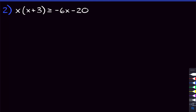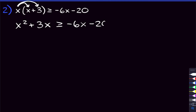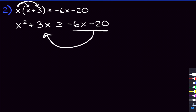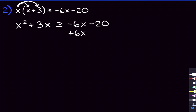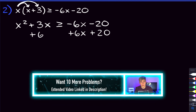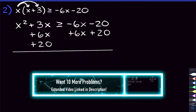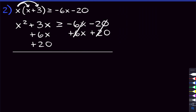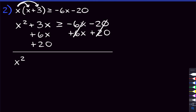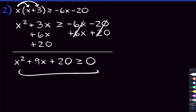Moving on to problem two, this quadratic looks pretty nasty — we've got stuff all over the place, so we have to do a little bit of simplifying before we can start factoring. First, we'll distribute through the x: x times x is x squared, x times three is plus three x. And that's going to be greater than or equal to negative six x minus 20. For quadratics, we want everything on one side and zero on the other, so let's get that negative six x minus 20 over to the left-hand side by adding six x and adding 20. We're left with x squared plus nine x plus 20 is greater than or equal to zero.